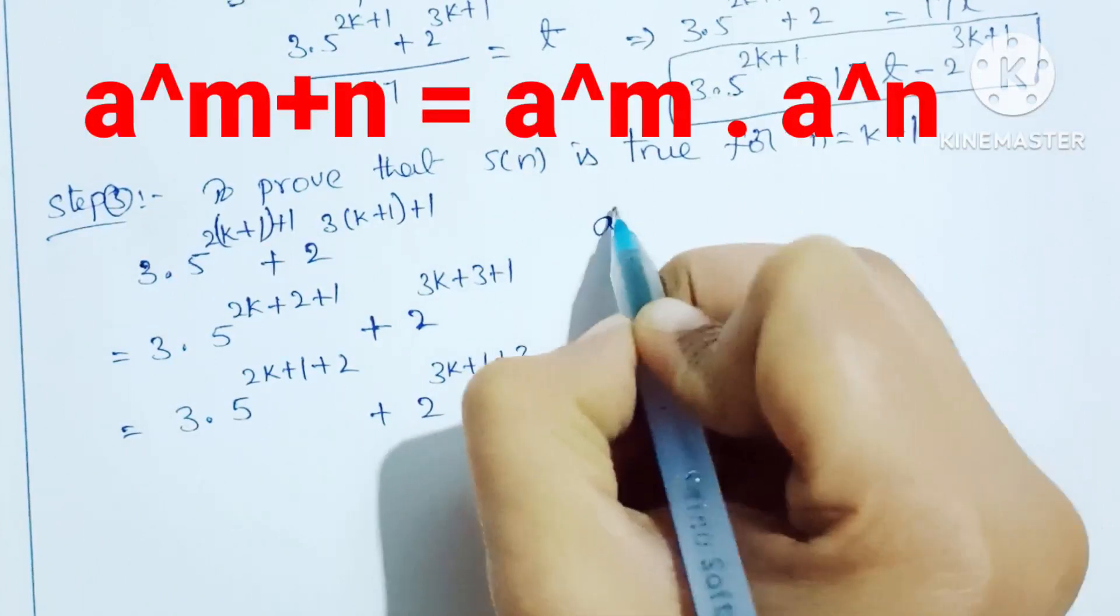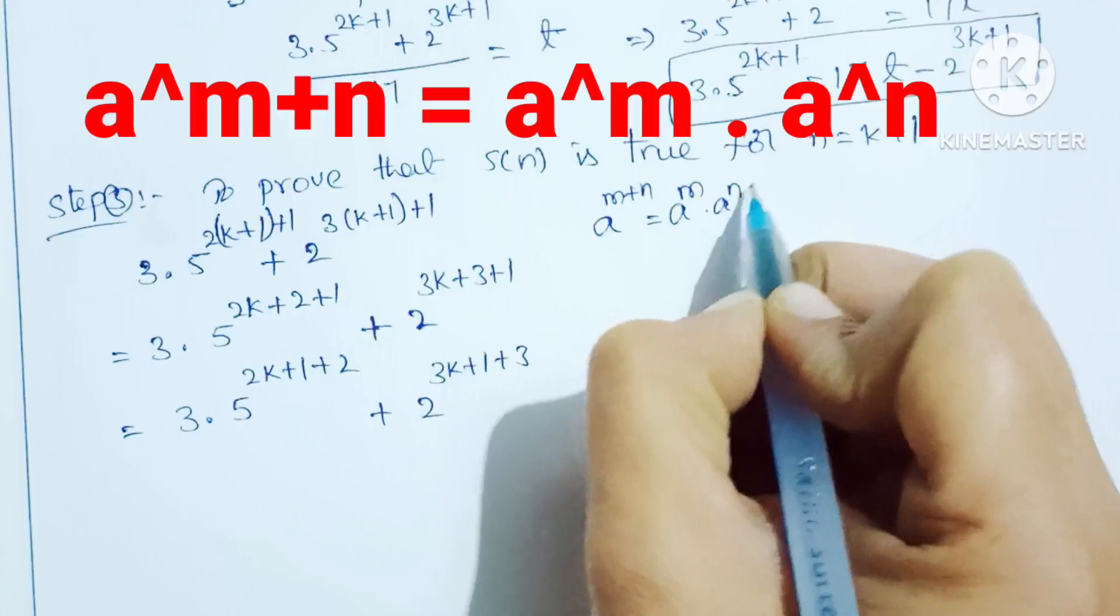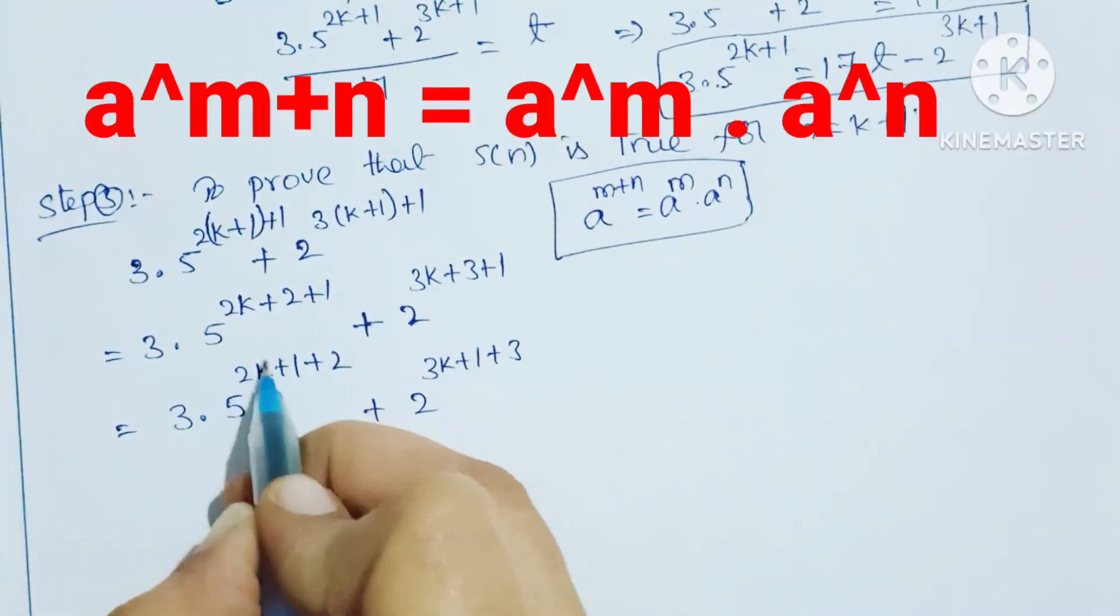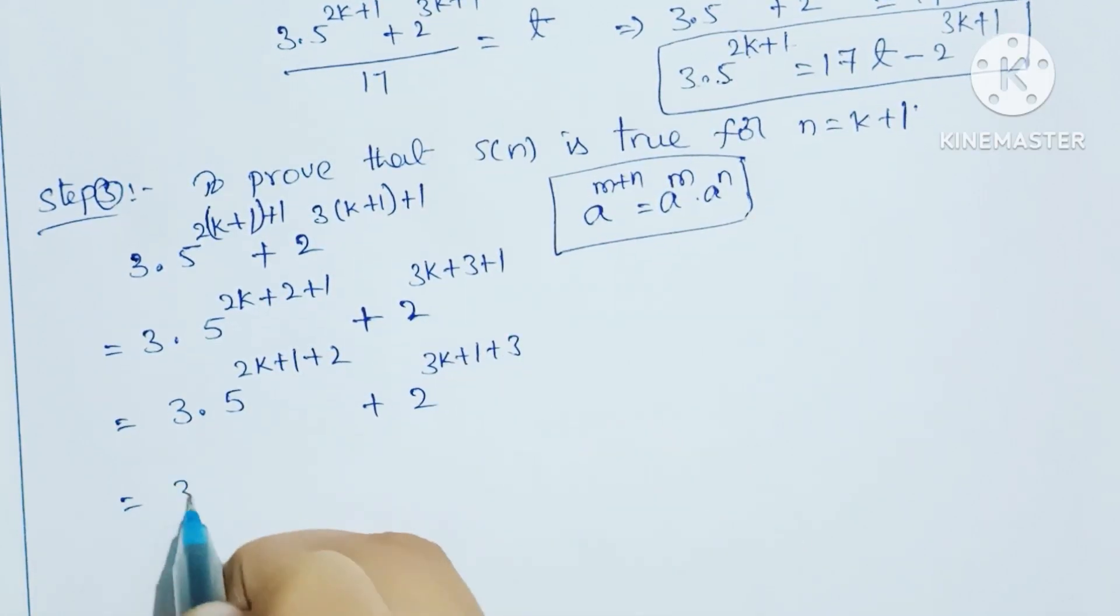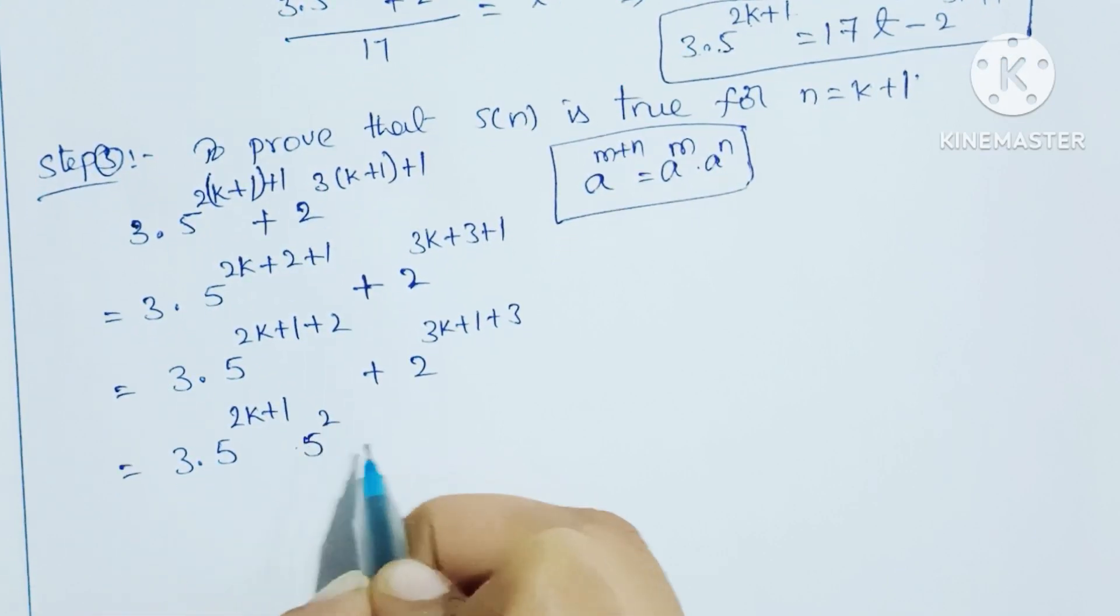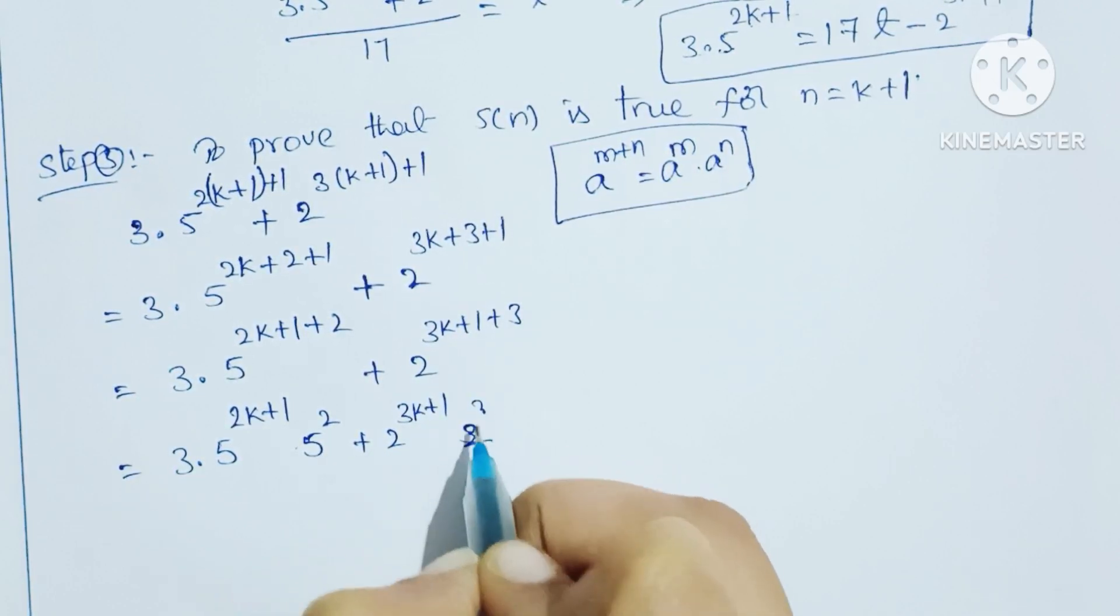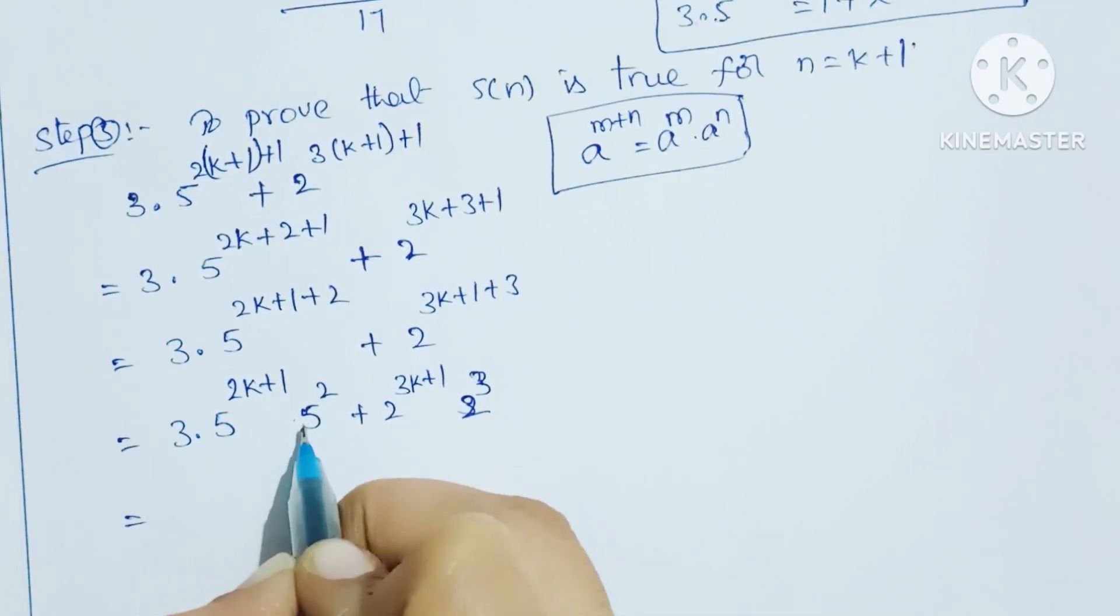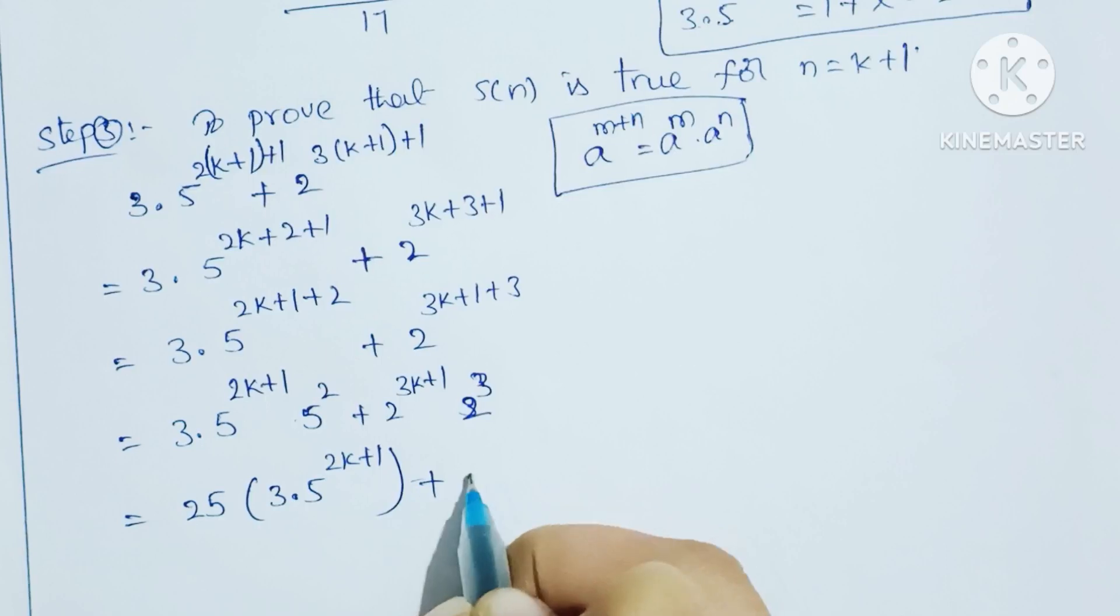Now the formula is a power m plus n equals a power m into a power n. Using this formula: 3 into 5 power 2k plus 1 into 5 squared, plus 2 power 3k plus 1 into 2 cubed. That equals 25 into 3 into 5 power 2k plus 1 plus 8 into 2 power 3k plus 1.